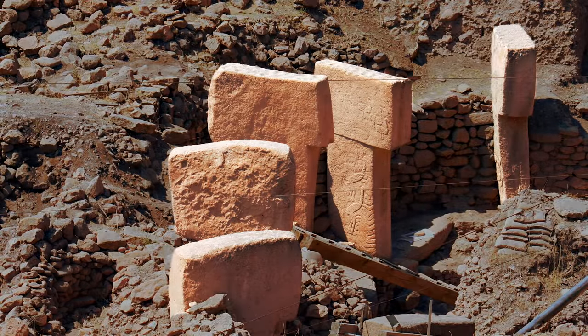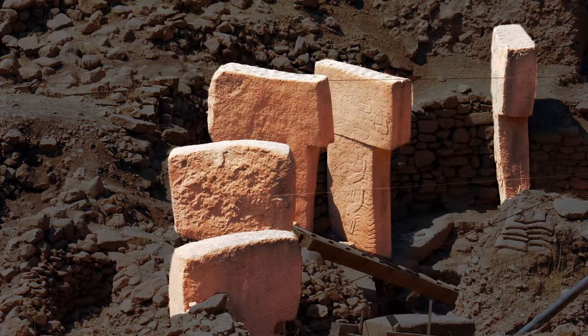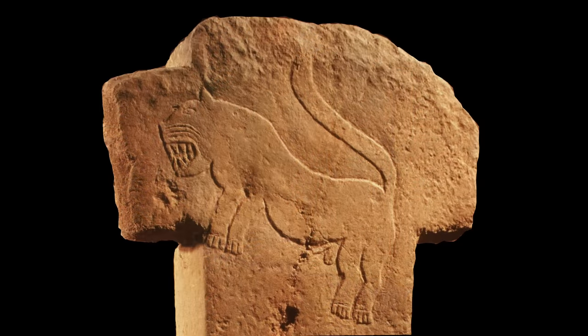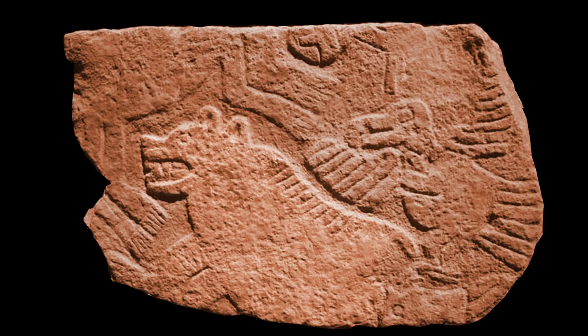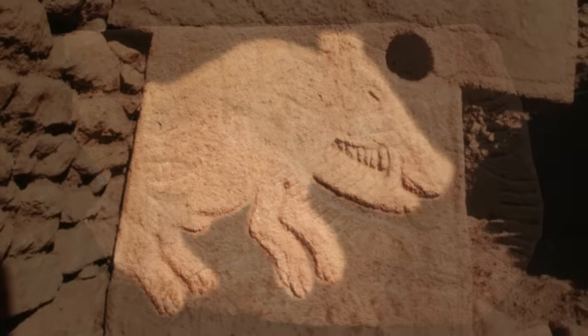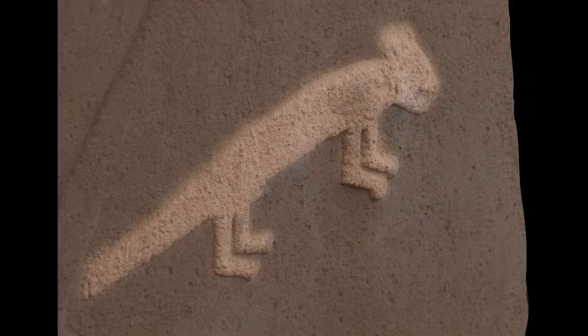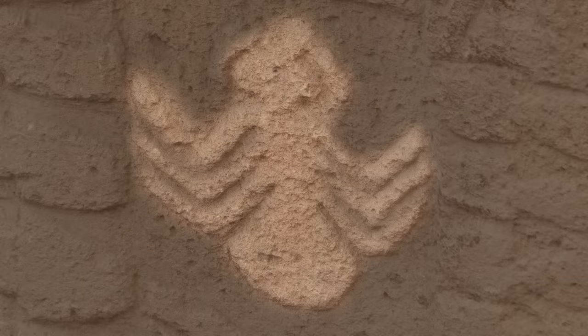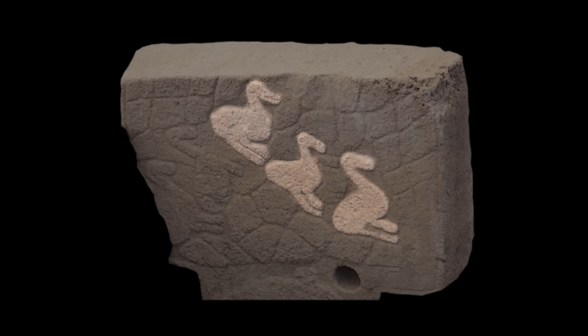Embedded in the stone walls of the rooms are decorative T-shaped pillars. Carved into the pillars are lions, bears, wild boars, lizards, spiders, and, surprisingly, ducks. Not only are the stones beautifully carved, they are placed with precision.